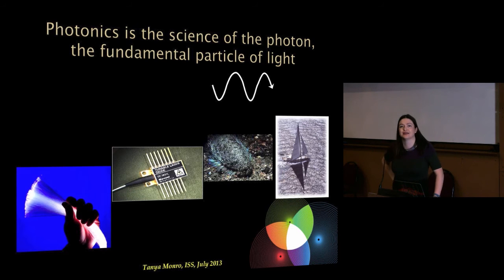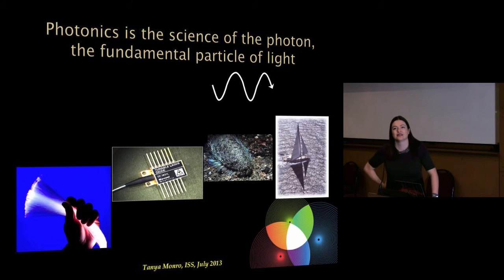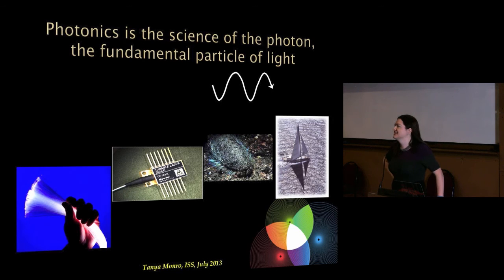This is a creature called the sea mouse, which lives around the coastal waters of Australia. The spines around the outside glow iridescent colours. Those little spines under the microscope have micron-scale patterns within them that make interesting ways of reflecting light. And on the far right, that boat has a smart mast which within it has optical fibre strain sensors that can tell the crew when the mast is experiencing too much strain and should be brought down.